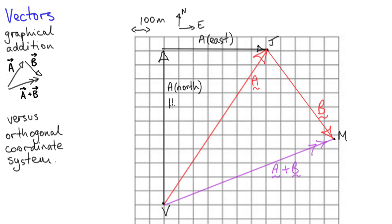So I can write A as 1100 meters to the north plus 700 meters to the east. What I'm really doing here is breaking down the vector A into the sum of two smaller vectors, and the important property of these two vectors is that they are at right angles to each other — that's what orthogonal means.